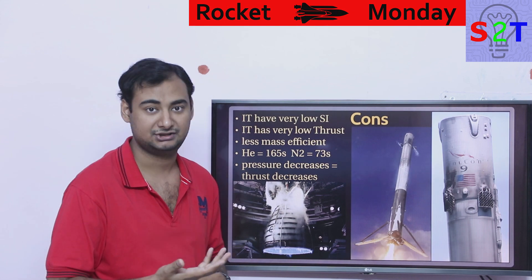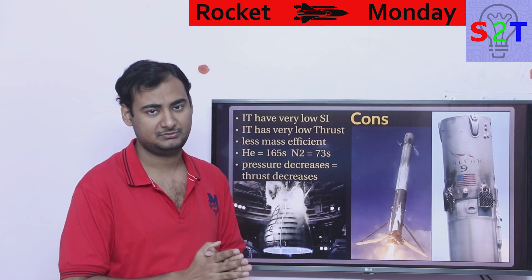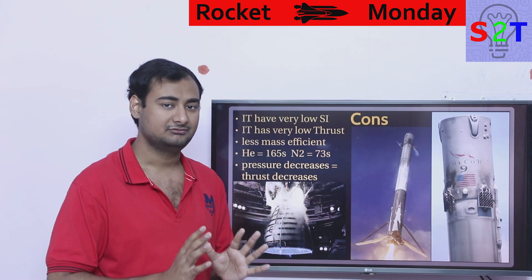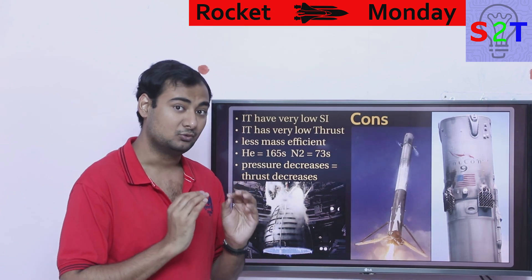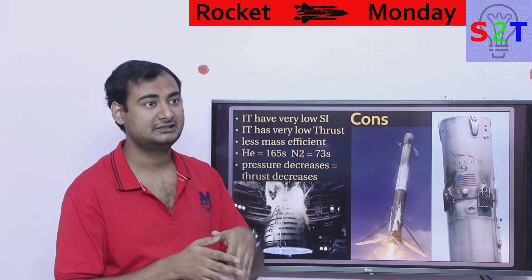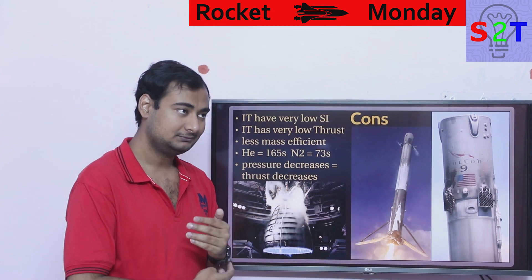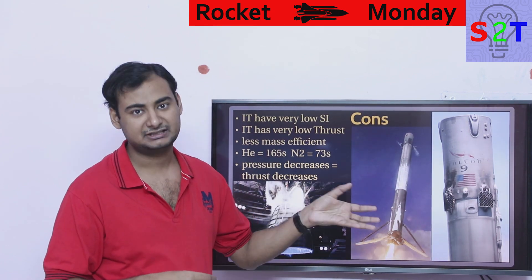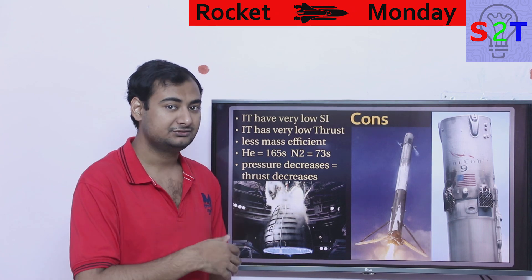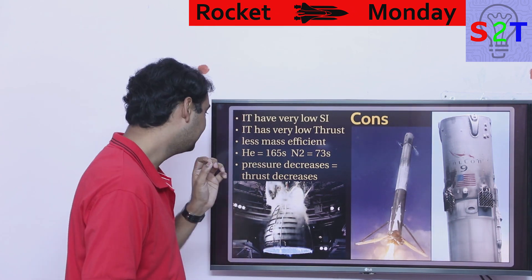Ion engines have ludicrously weak thrust — micro-newtons — but their specific impulse can reach 3,000 to 5,000 seconds. Cold gas thrusters are flat out weak on both counts: you don't get the mileage or the horsepower.